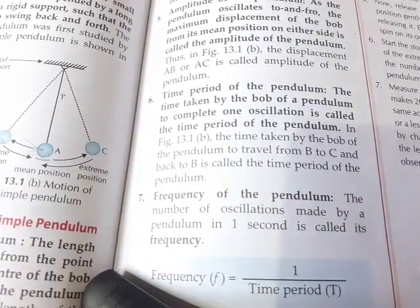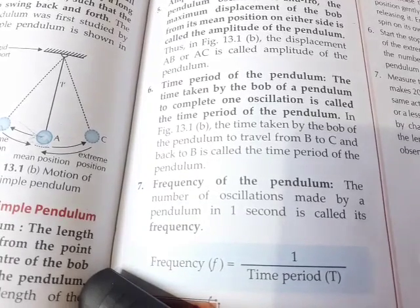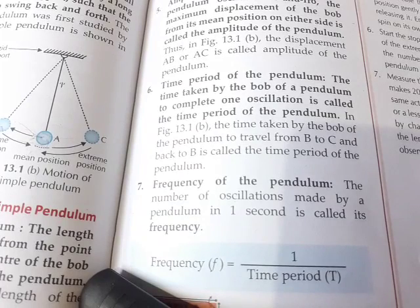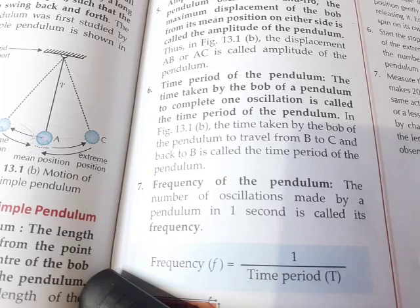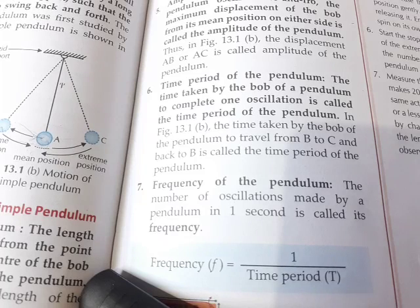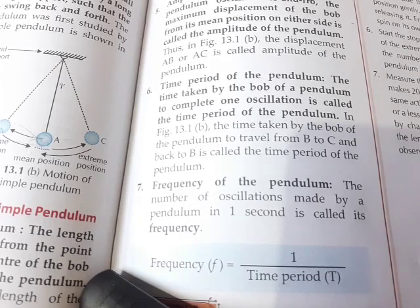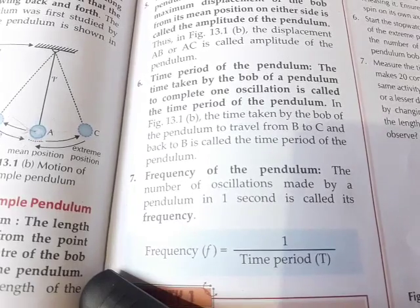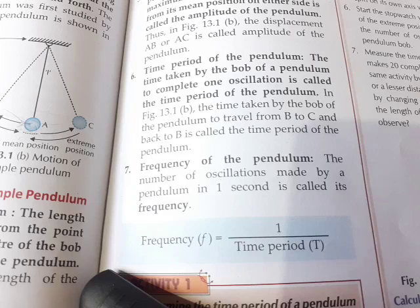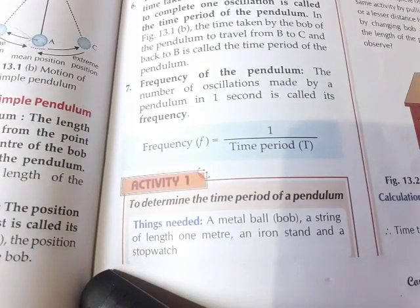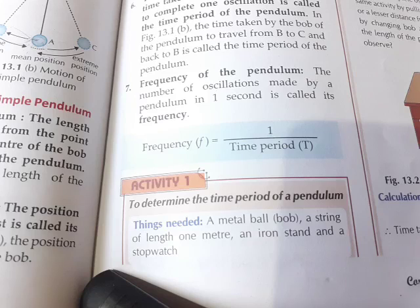Frequency of the pendulum — frequency means the number of times something repeats, or its rate of repetition. The number of complete oscillations a simple pendulum makes in one second is called its frequency. So in one second, however many oscillations are completed — that is the frequency. The formula for frequency is: frequency = 1 divided by time period.